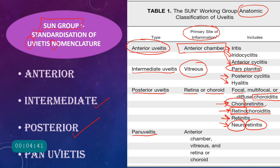Pan-uveitis is when all three anatomical locations of the uvea are involved — that means anterior uveitis plus intermediate uveitis plus posterior uveitis. So the anterior chamber, the vitreous chamber, and the retina and choroid are all involved.